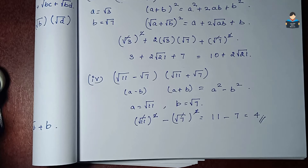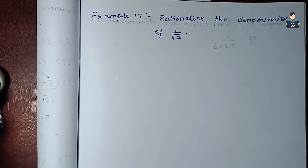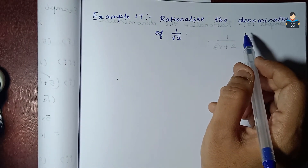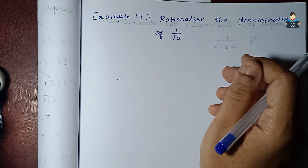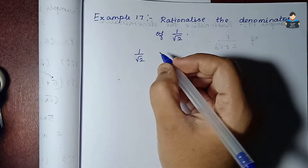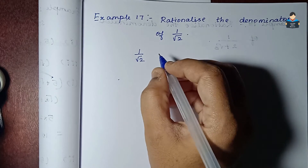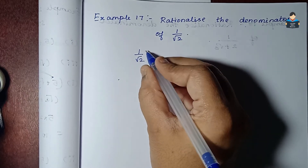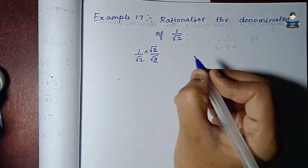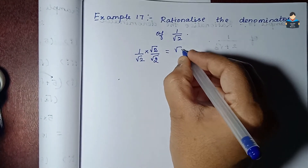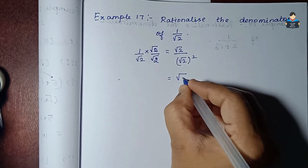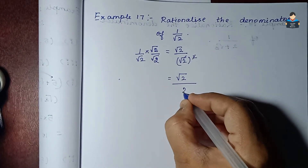Example 17: Rationalize the denominator of 1/√2. To rationalize, we multiply the numerator and denominator by √2. So: (1 × √2) / (√2 × √2) = √2 / 2, since square root and square cancel to give 2.